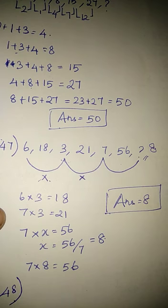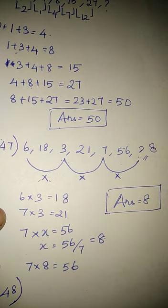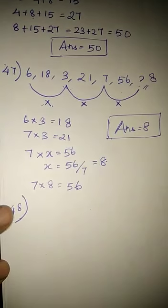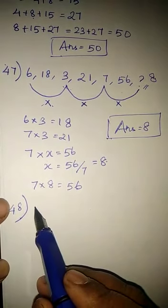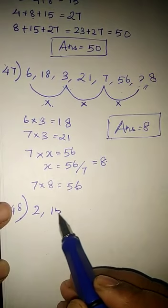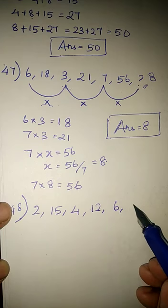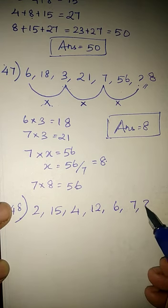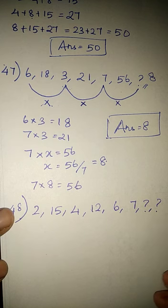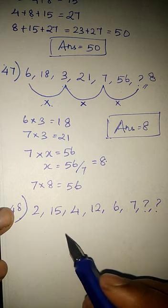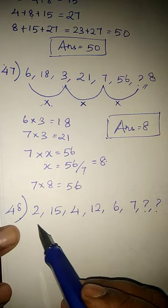48th sum: 2 comma 15 comma 4 comma 12 comma 6 comma 7 comma question mark, then question mark. Here they asked 2 solutions. So we can find out. If we check it out, it's an alternate multiplication method.